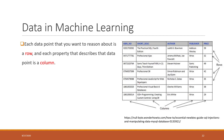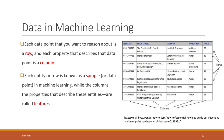In machine learning, we use different names referring to the same things. In machine learning, each entity — each row — is called a sample. And each column is called a feature.